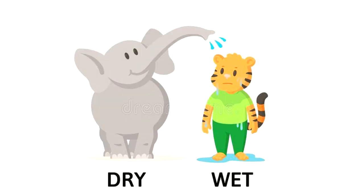In this picture there is an elephant and there is a tiger. The elephant is dry and the tiger is wet. Why is the tiger wet? Because the elephant is splashing water on the tiger. So the tiger is wet and the elephant is dry.